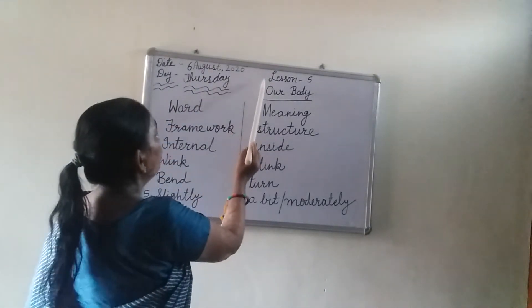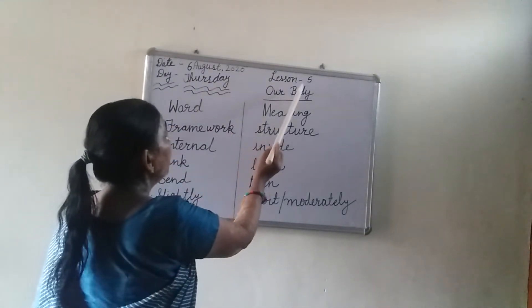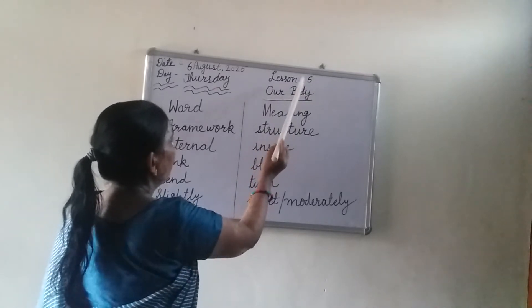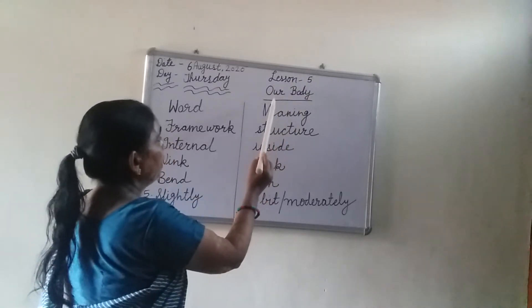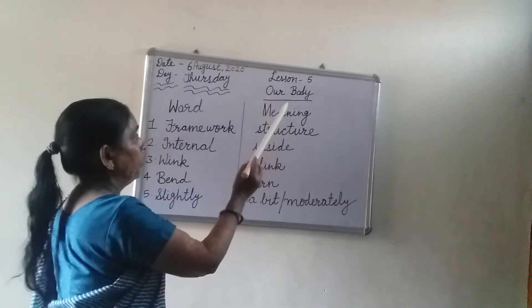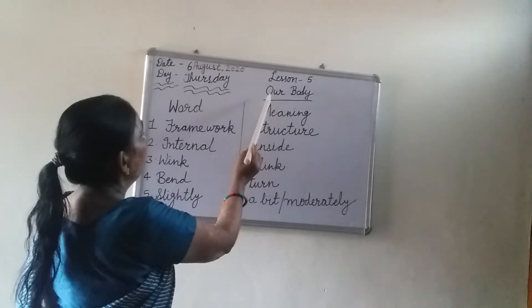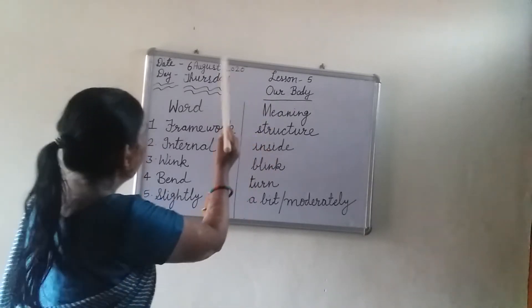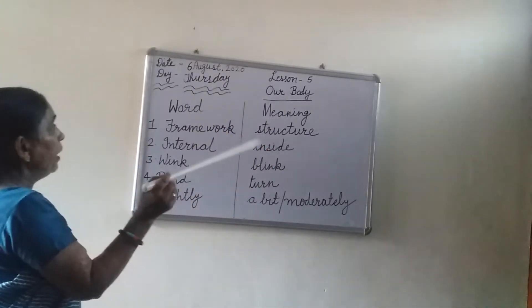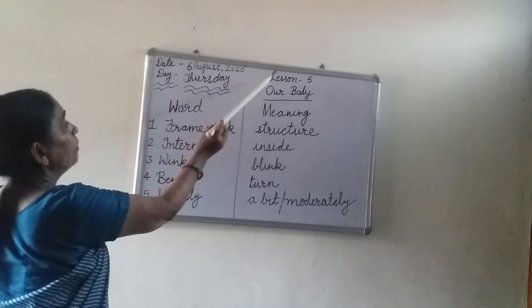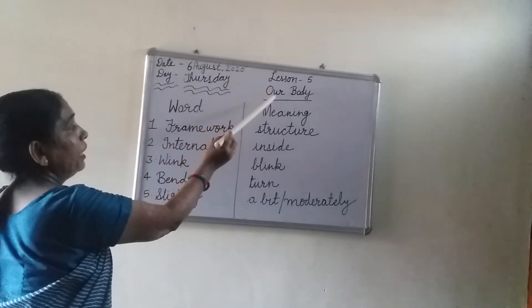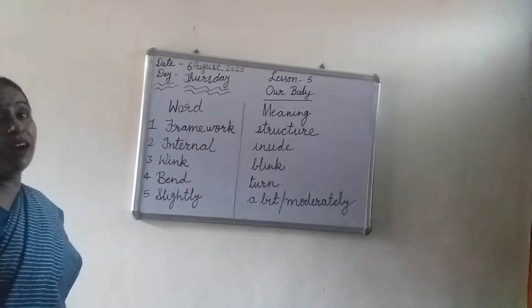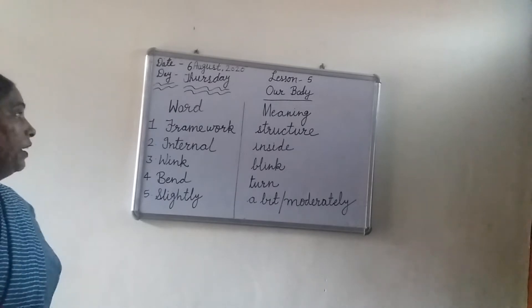आपको work start करने से पहले date और day mention करना है. उसके बाद आपको lesson का number राइट करना है — Lesson 5. फिर आपको lesson name राइट करना है. Topic क्या है हमारा? Art Body. Work start करने से पहले आपको date, day, और lesson number राइट करना है, उसके बाद ही आप work start करेंगे.